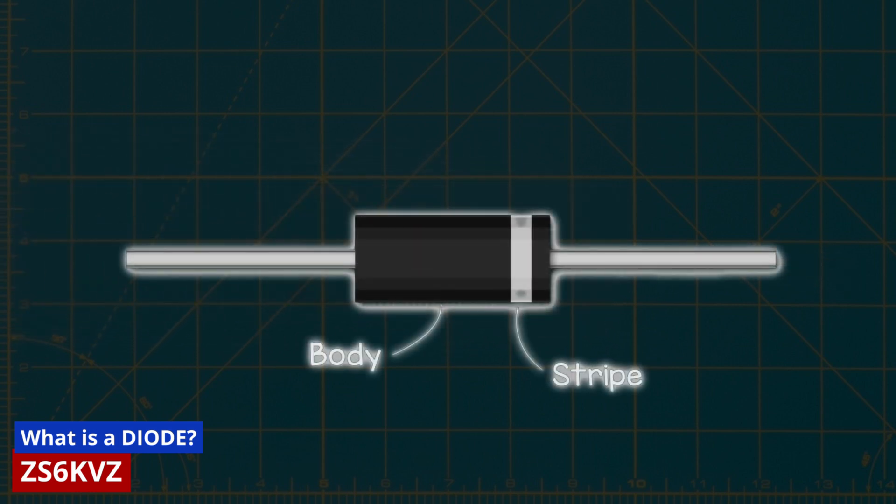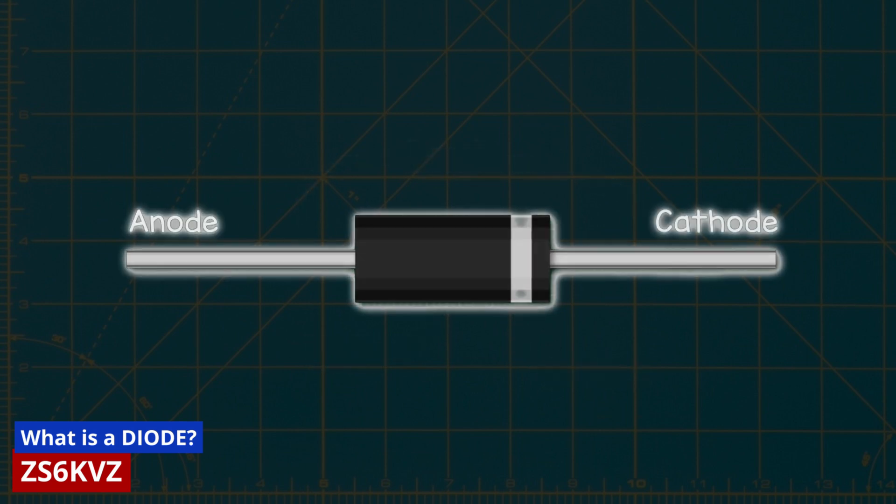The specific functions of these ends will be explained later in this video. The end with the stripe is called the cathode, while the other end is the anode.